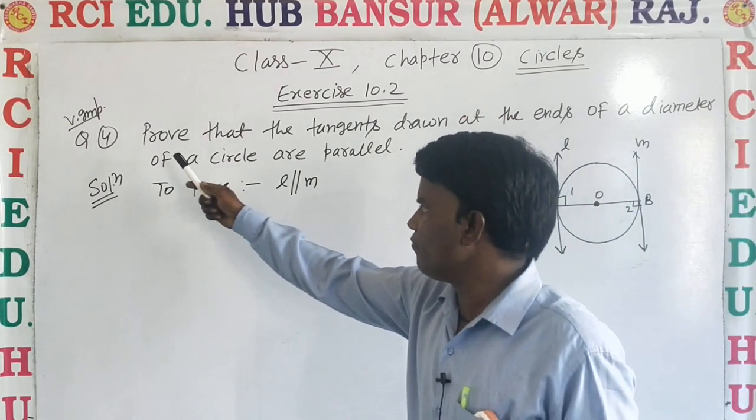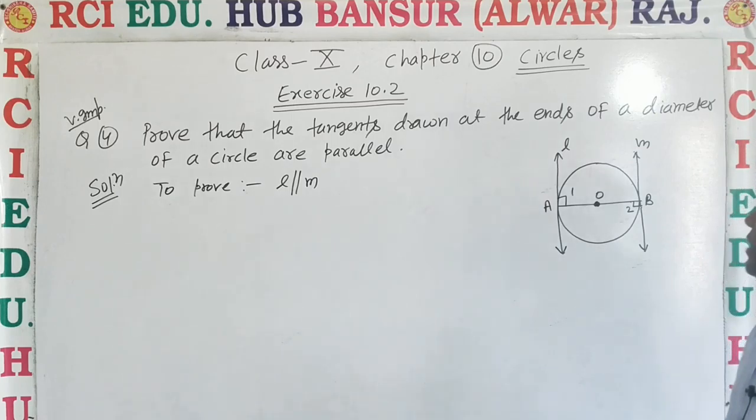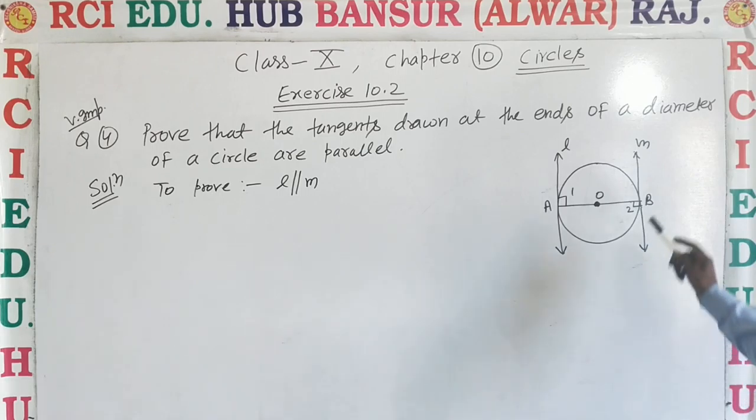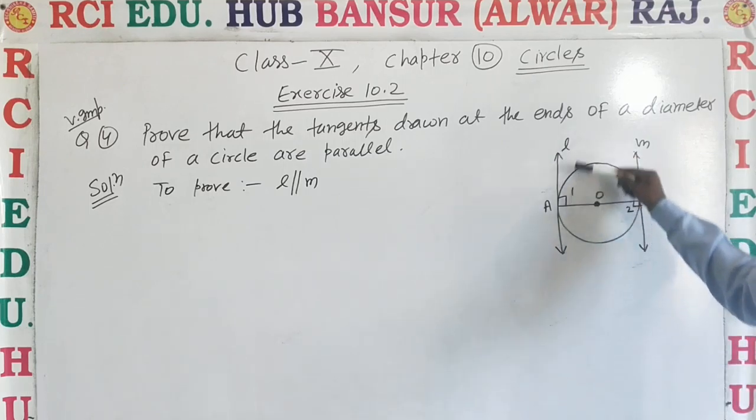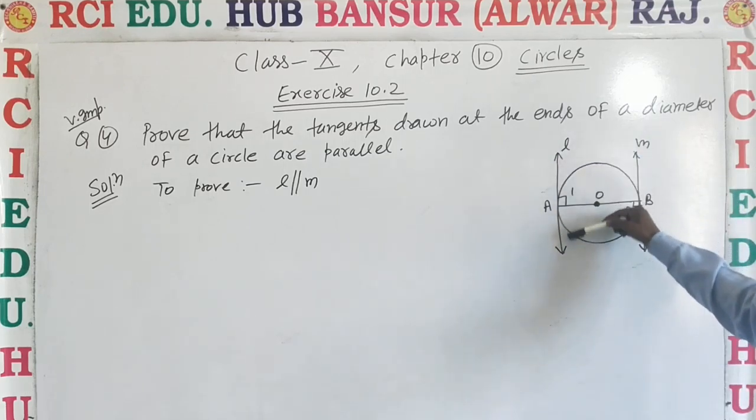Question number 4. Prove that the tangent drawn at the ends of a diameter of a circle are parallel. Suppose this circle has center point, two tangents L and M are two tangents.